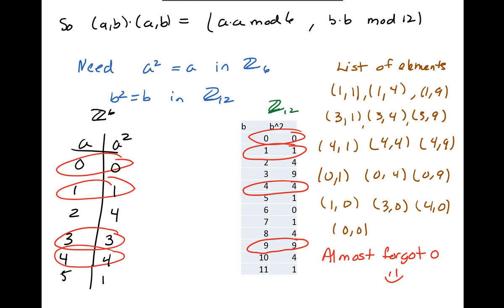So then I need to take notice that I have to take all the possible combinations of those red circle pieces and I can list them out. For example, 1 in Z6 crossed with 1 in Z12 is an idempotent element. 1 in Z6 crossed with 4 in Z12 is a second element and so forth. So you can just list them out by brute force. And for some reason I almost forgot 0. So all the 0 elements also have to be there.